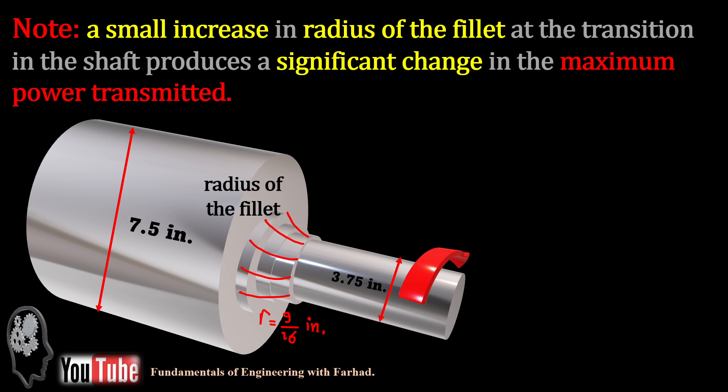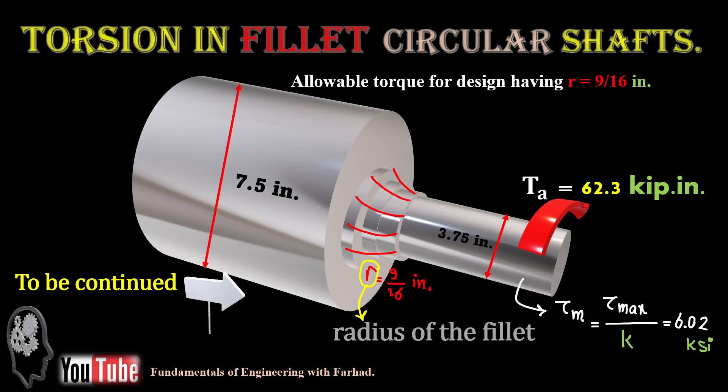In the next video, we'll talk about what if we increase the radius of the fillet to a higher amount, then what happens to torsional torque, and also tau maximum, and also power transmitted. Thank you.